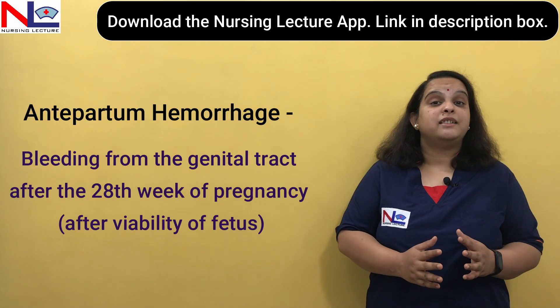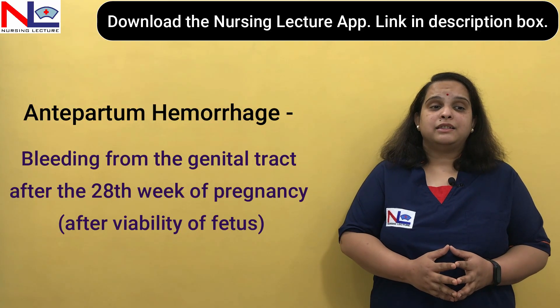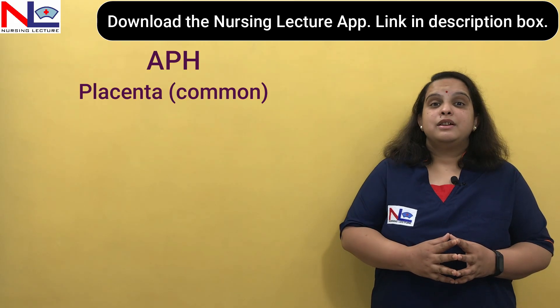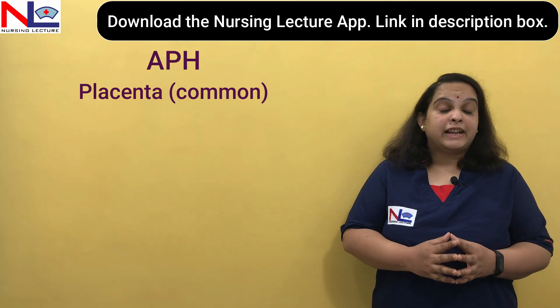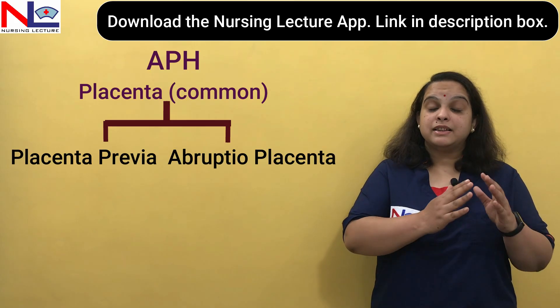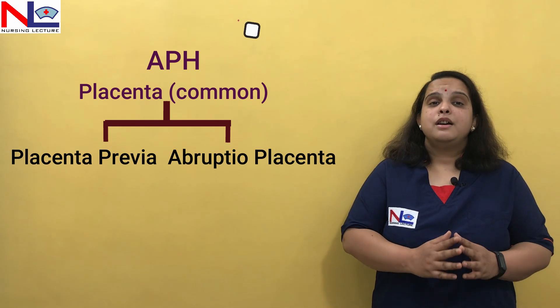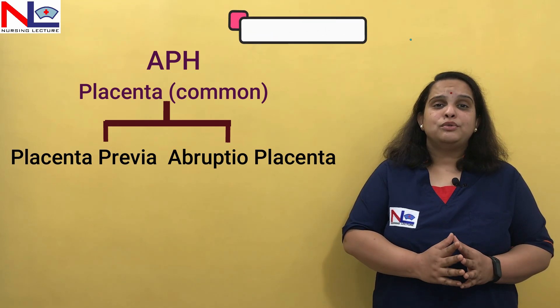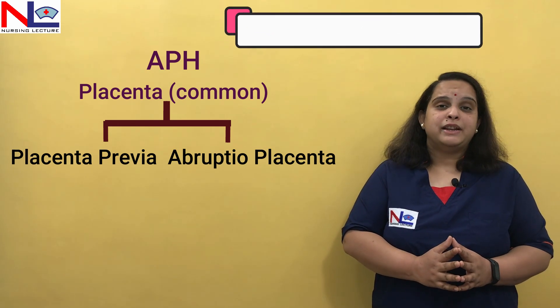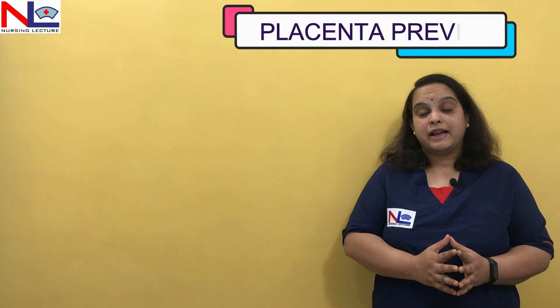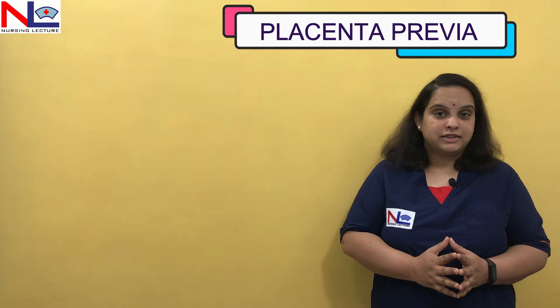This is a high-risk condition, and the most common reason for APH is placenta-derived. It is classified into two types: placenta previa and abruptio placenta. In this lecture, I'm going to briefly explain what placenta previa is, its basic types, and its clinical picture.